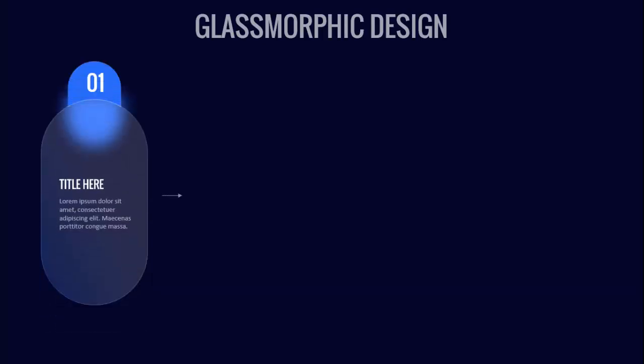In today's tutorial, I'm going to show you how to create glassmorphic design in PowerPoint. This is how the slide works — when I click, the first option comes. You can see here I put option one with a glassmorphic design at the back side, and then you can add the title and the detailed text.